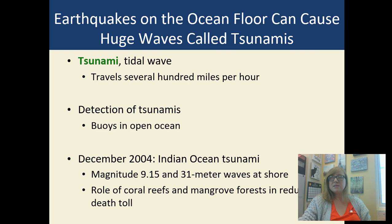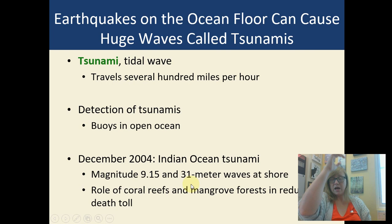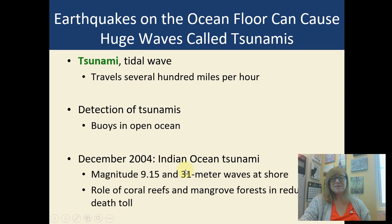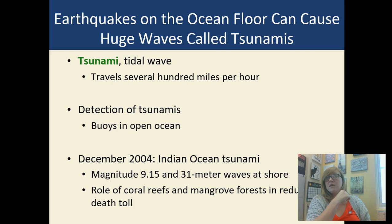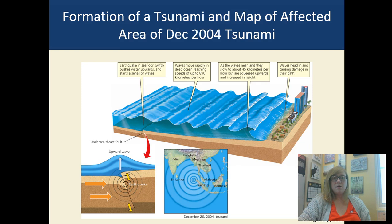There was a huge tsunami in the Indian Ocean in 2004 — magnitude 9.15, which is a humongous earthquake. It caused 31-meter-high waves at the shore — that's about 93 feet, almost 100-foot-high waves. You'd have to be in a building with more than 10 stories just to be above water. Coral reefs and mangroves, which grow in estuary-type areas that get both salt and fresh water, help diminish the amount of wave that smashes onto the land — which is one of many reasons why we want to keep our wetlands, coral reefs, and mangroves.